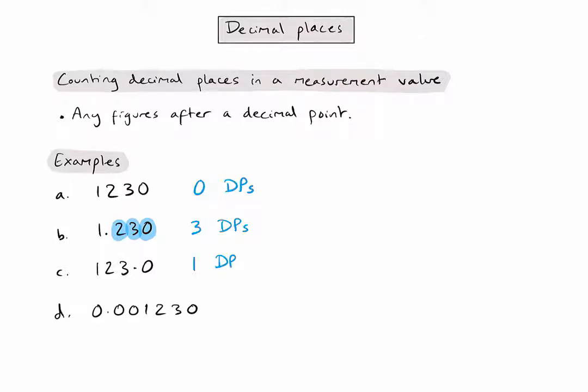In the fourth example, I can see that after the decimal point, there are six figures. Therefore, we say this number has six decimal places.